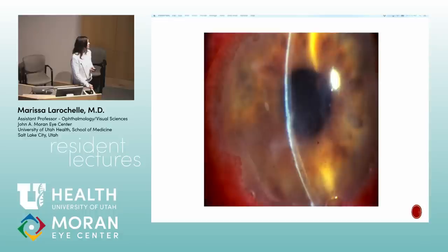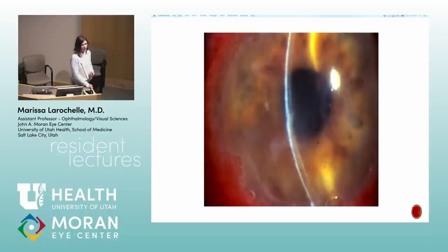Clinical scenario: a 60-year-old man presents with a red painful eye, anterior chamber cells, corneal swelling, and it's unilateral. Differential includes phacolytic if there's a lot of inflammation with pressure around 24. Our number one unilateral anterior uveitis with corneal changes and high pressure is some kind of viral uveitis.